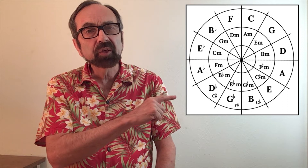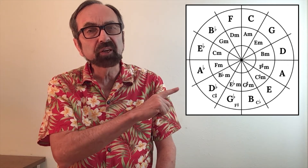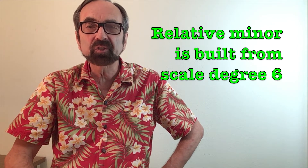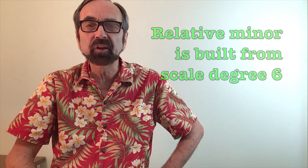One way to rote memorize any relative minor chord is to get out your circle of fifths. That chord on the inner circle is the relative minor. So you can see by going down to E, you move inside the circle and you have a C sharp minor. The relative minor chord can always be found as the sixth scale degree of any major scale. So in the key of C, count up to the note A, build your chord and you'll have your relative minor.